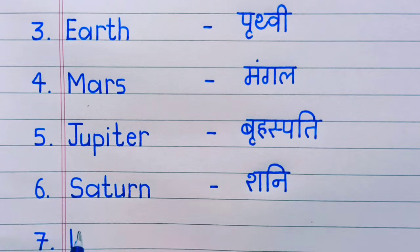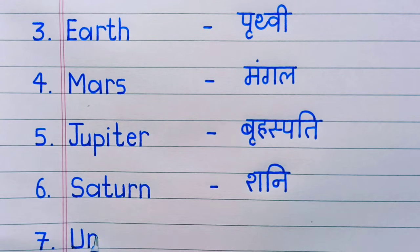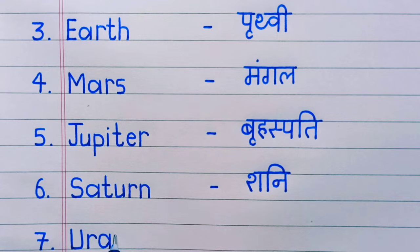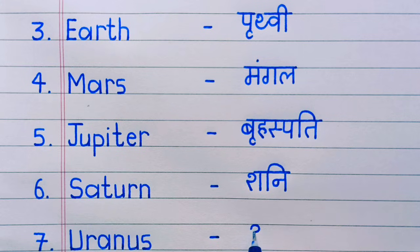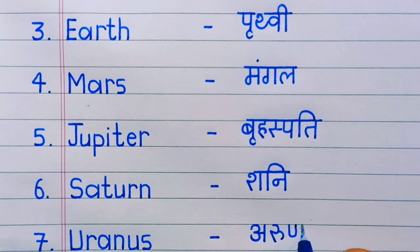Number seven: Uranus. U-R-A-N-U-S, Uranus. Uranus means Arun.